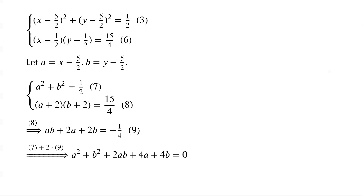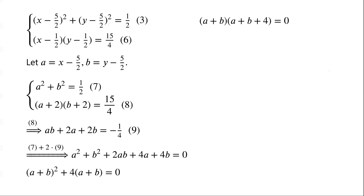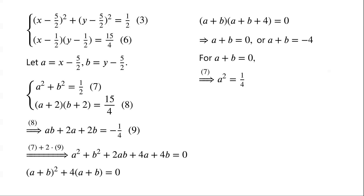Taking equation 7 plus 2 times equation 9, we have: A² + B² + 2AB + 4A + 4B = 0. Now A² + B² + 2AB = (A + B)², and 4A + 4B = 4(A + B). These two terms have a common factor (A + B), so they factorize as (A + B)(A + B + 4) = 0. So either A + B = 0 or A + B = −4. For A + B = 0: from equation 7, A² = 1/4, so A = ±1/2 and B = ∓1/2.